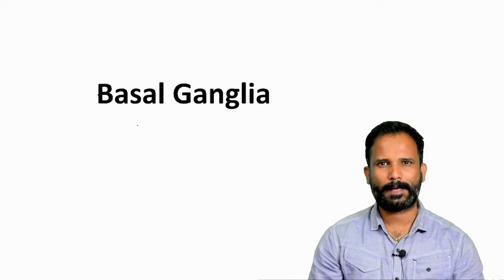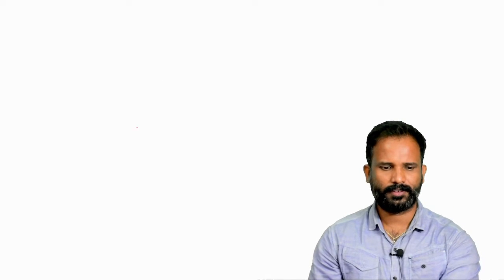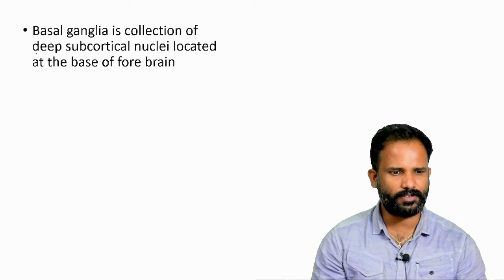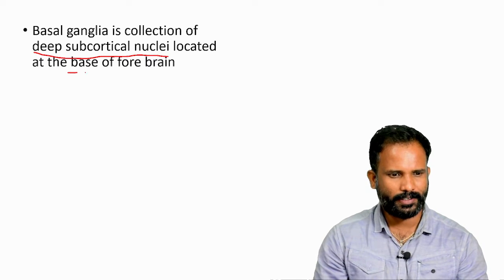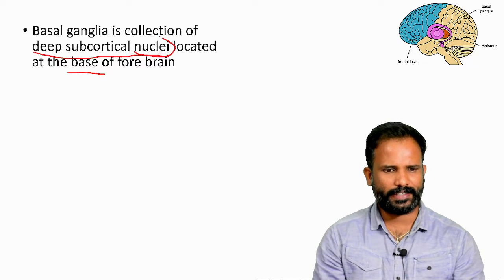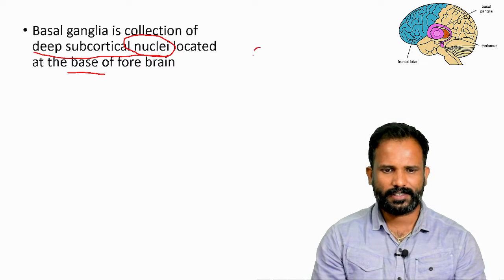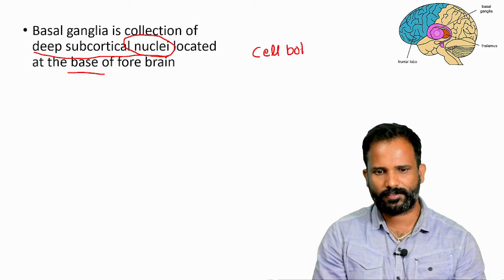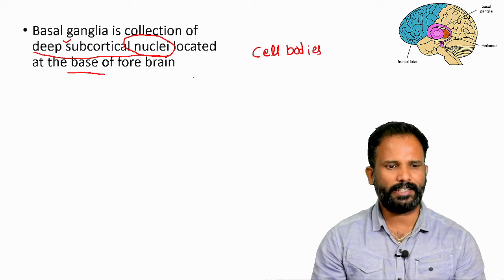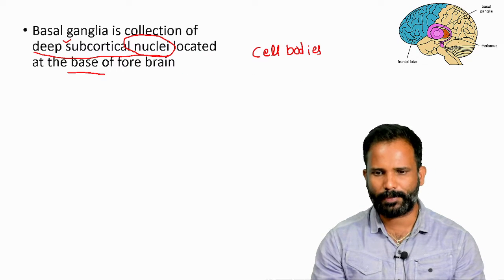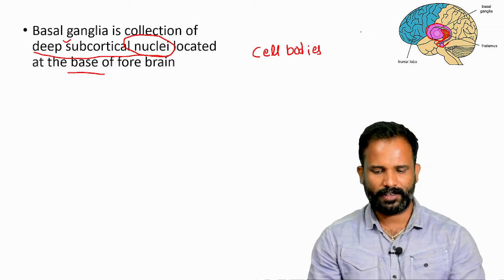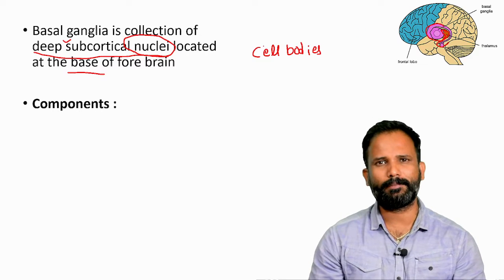Today's topic is basal ganglia. Basal ganglia is a collection of deep subcortical nuclei located at the base of the brain. Nuclei is a collection of cell bodies, and these cell bodies are located deeply in the subcortical region at the base of the forebrain.